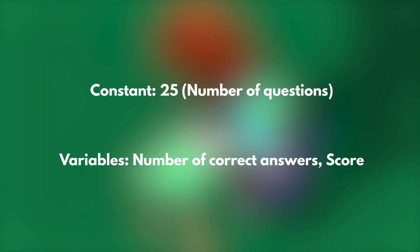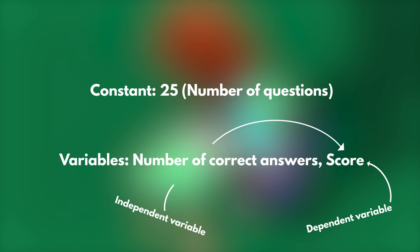That would be our dependent variable. Do the number of correct questions determine the score of the test, or does the score of the test determine the number of correct questions? We all know it's the first — the number of correct answers determines the score of the test. That means the score of the test is the dependent variable and the independent variable is the number of correct answers. Now be careful! That is different from the fact that I can find the number of correct answers if I am informed of the score of the test, knowing that each correct answer is 4 points. That does not change the fact that the score of the test is calculated based on the number of Anna's correct answers.